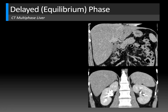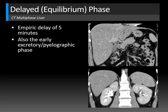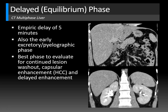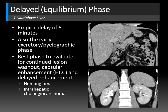The final phase of multiphase CT liver is the delayed or equilibrium phase, starting around 4 to 5 minutes and continuing until 10 minutes, with contrast leaking out of the liver. This is also around the time you see the early excretory and pyelographic phases of the kidneys, so check the collecting system for urothelial carcinoma. The delayed phase is best for evaluating continued lesion washout and capsular enhancement typical of hepatocellular carcinoma, and for detecting delayed enhancement of hemangioma and intrahepatic cholangiocarcinoma.